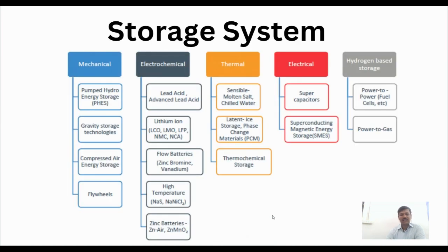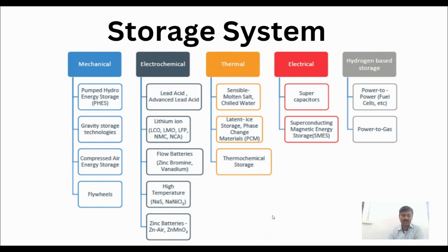Now, in detail, there are five types of energy storage systems which will be studied later. The first is mechanical storage system, which includes PHES (pumped hydro energy storage system), gravity storage technology, CAES (compressed air energy storage system), and flywheels.